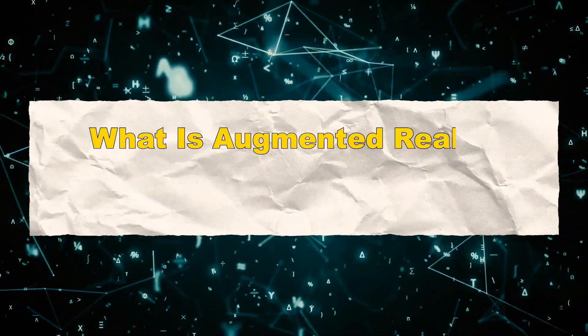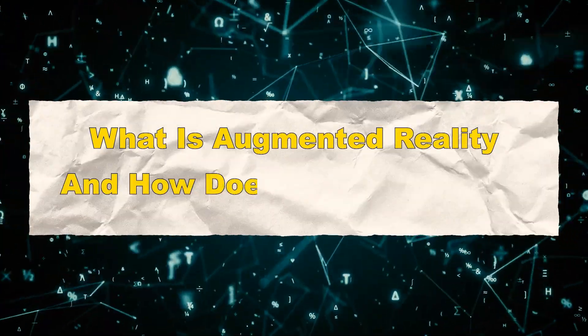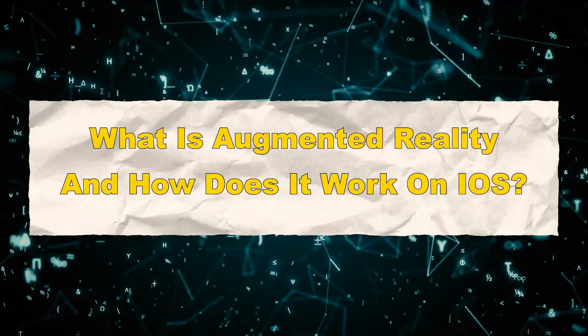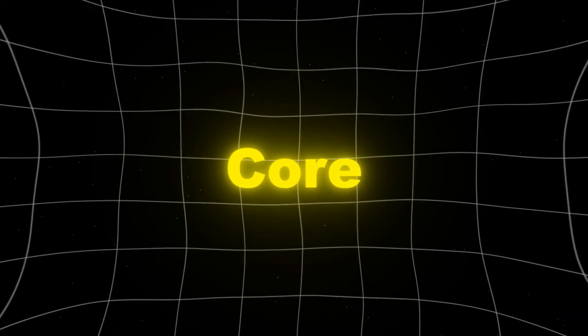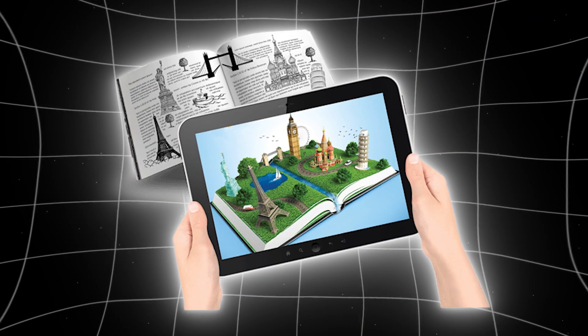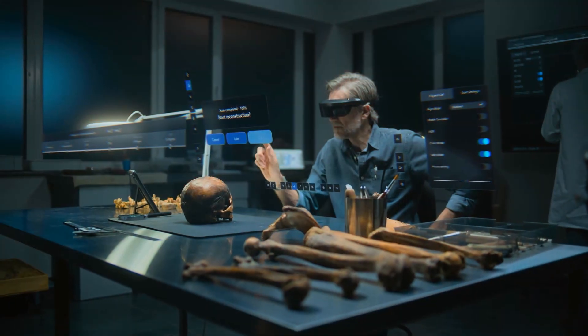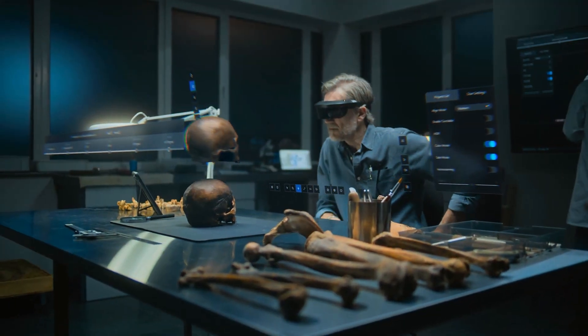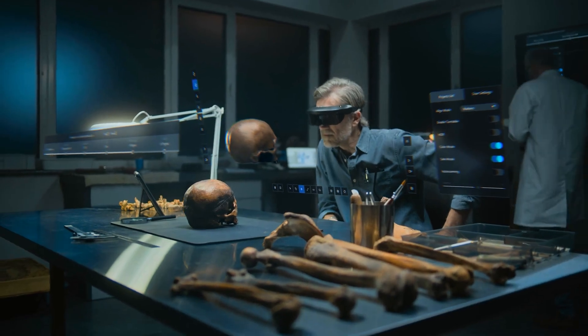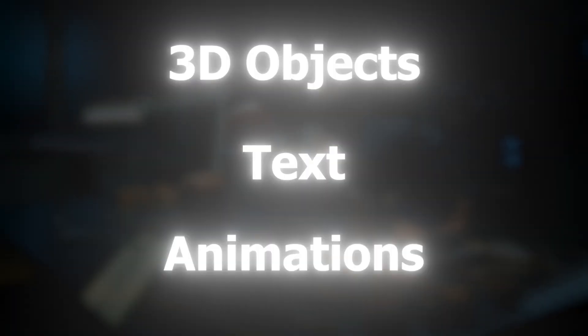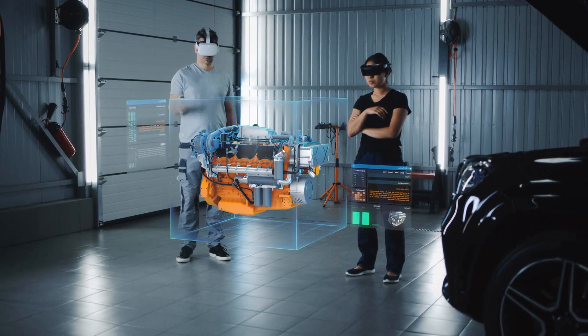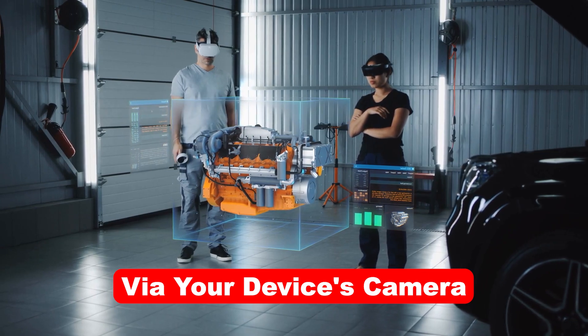What is augmented reality, and how does it work on iOS? At its core, augmented reality, AR, enhances the real world by overlaying virtual elements — such as 3D objects, text, or animations — onto your surroundings via your device's camera.